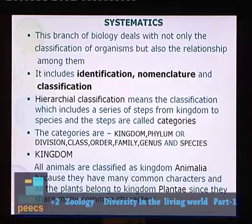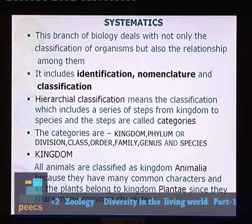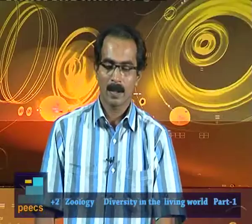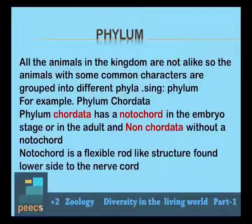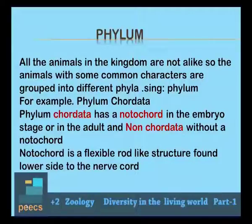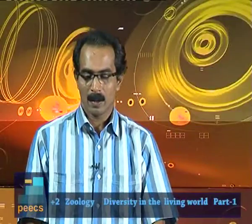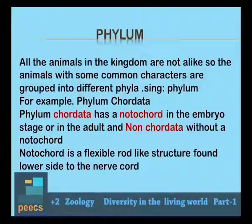The first category is kingdom. All animals are classified under kingdom Animalia and all plants under kingdom Plantae. The next category is phylum. Animals with some common characters are grouped into different phyla. For example, kingdom Animalia has phylum Chordata and non-Chordata. Phylum Chordata has a notochord in the embryo stage or adult, while non-Chordata lacks a notochord.